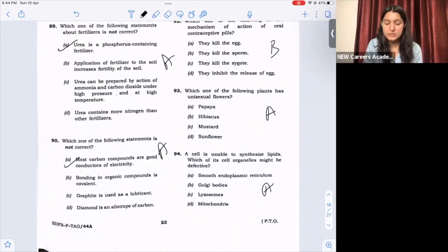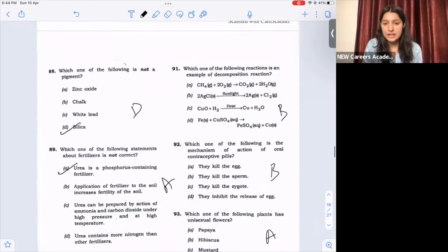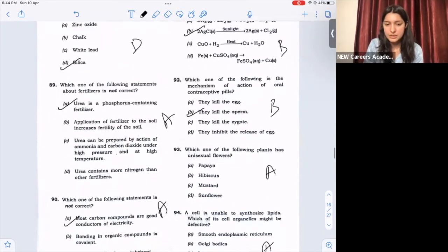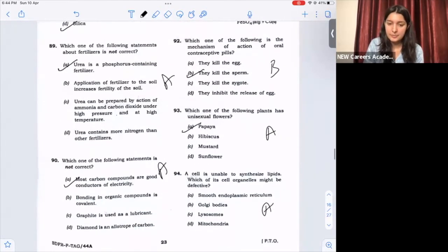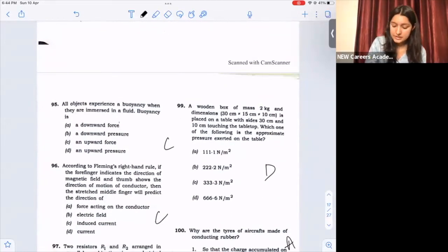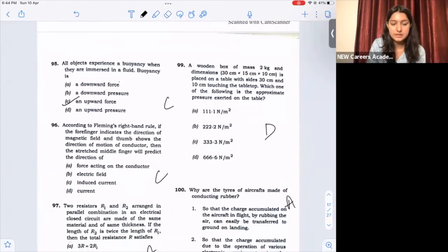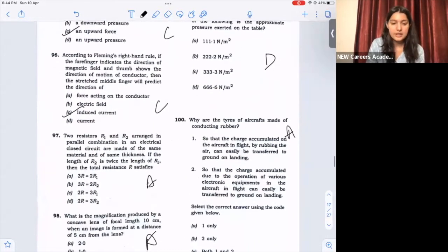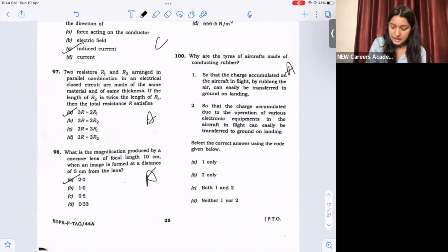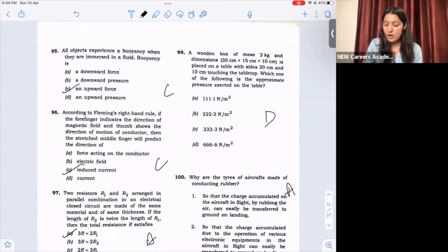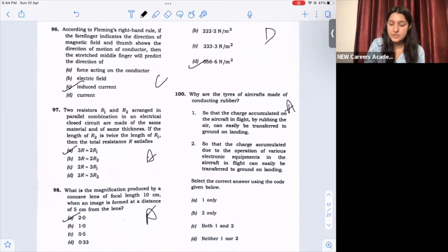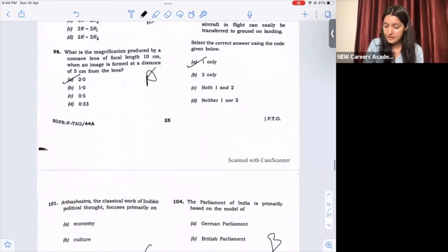91, option B. 92, option B, they kill the sperm. 93, option A, papaya. 94, option A, smooth and aeroplasmic reticulum. 95, option C, an upward force. 96, option C, induced current. 97, option A, 3R is equal to 2R1. 98, option A, 2. 99, option B, 666.6 newton per meter square. 100, option A only.